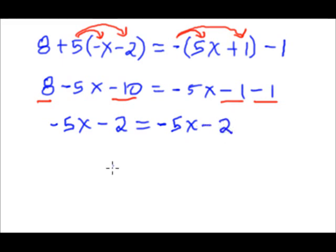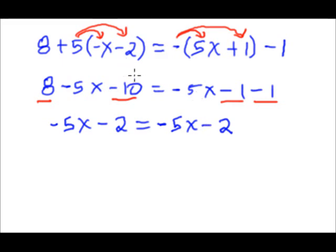When I simplify, I get negative five x plus eight minus ten, which is negative two, on the left side. And on the right side I get negative five x minus two. Notice both sides of the equation are exactly the same. So pick any number you want — x equals one, two, three, or whatever. If you substitute any x value, both sides of the equation are always going to be the same. That's why we say all real numbers, because any number will work.